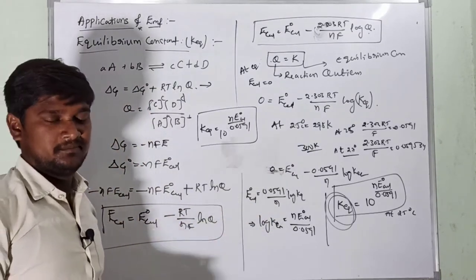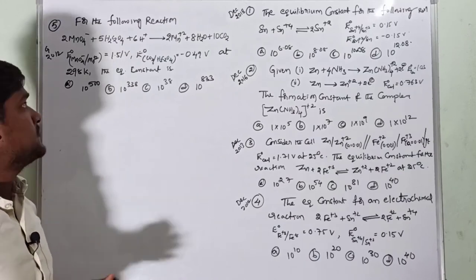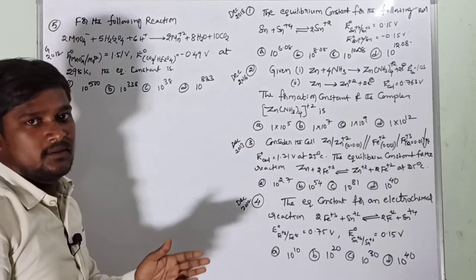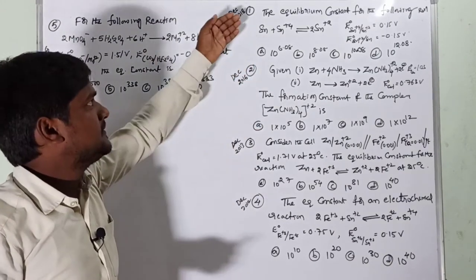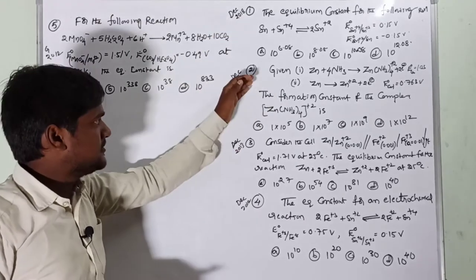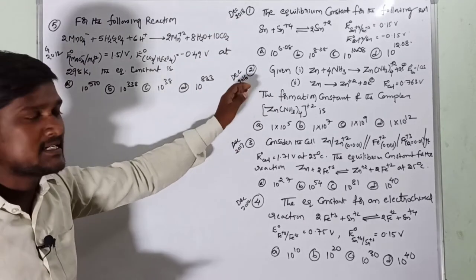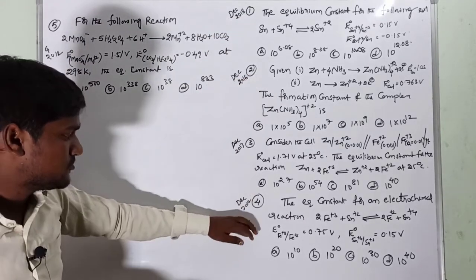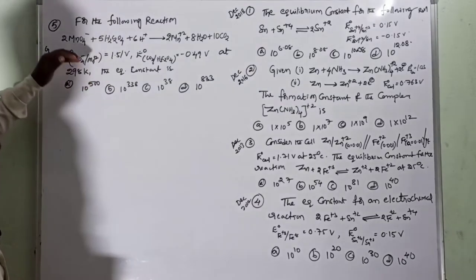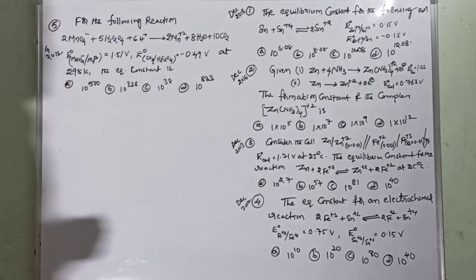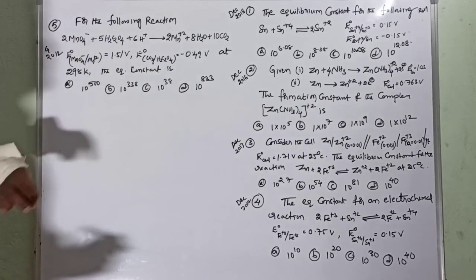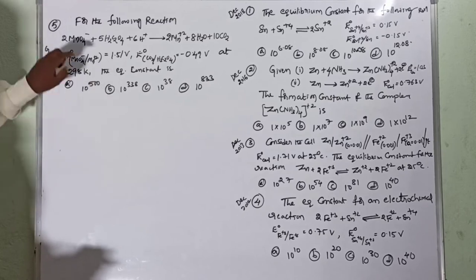Now let us solve some problems regarding the equilibrium constant. These are from December 2018, December 2016, December 2013, December 2012 — all four-mark questions. Let us start with the GATE 2012 question.